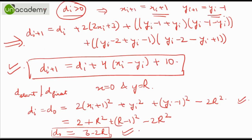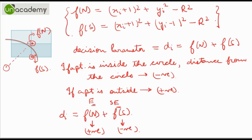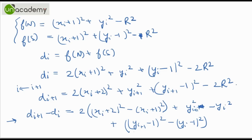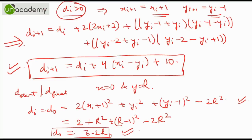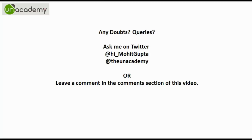So this is all about the Bresenham circle drawing algorithm. Let us take a quick review: it decides which of the points in question is at the larger distance and rejects that one, selecting the point nearer to the actual circle. For this we have f of N and f of S functions and a decision parameter di, which we use in each iteration to keep on selecting the pixels. You can subscribe to this channel at youtube.com/unacademy. If you have any doubts you can tweet to me at hi_mohitgupta or tweet to unacademy, or leave a comment below. Thank you for watching.